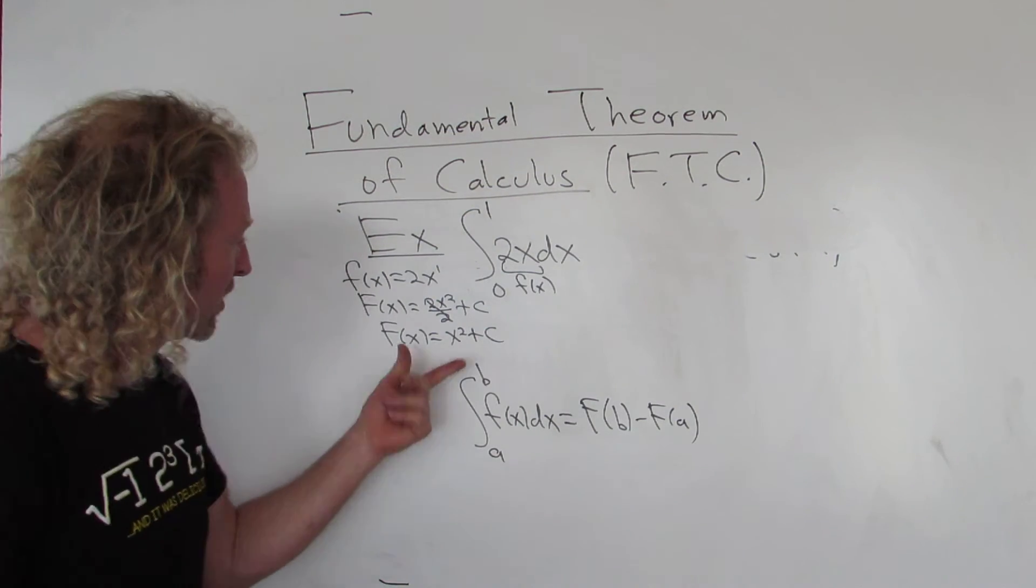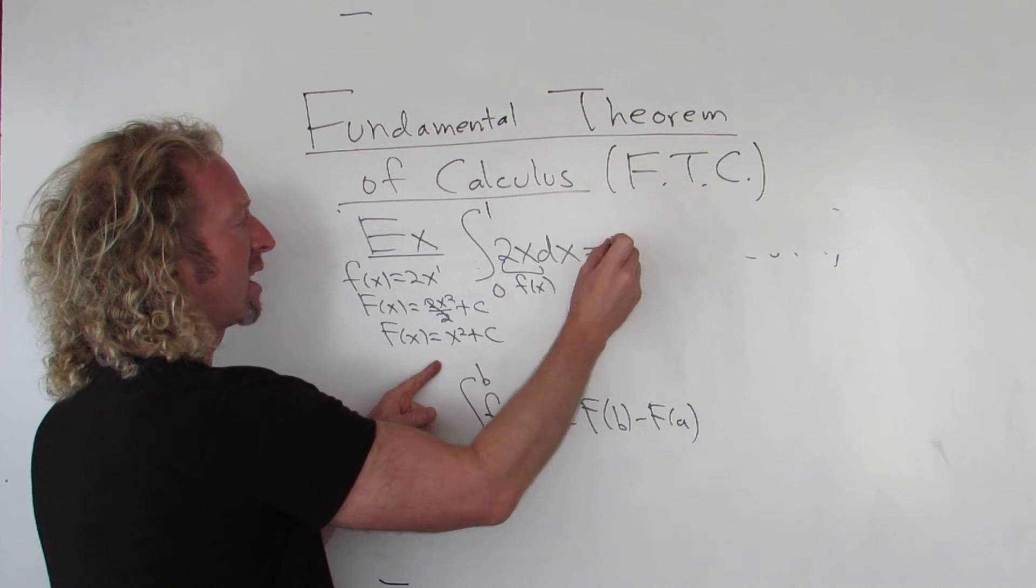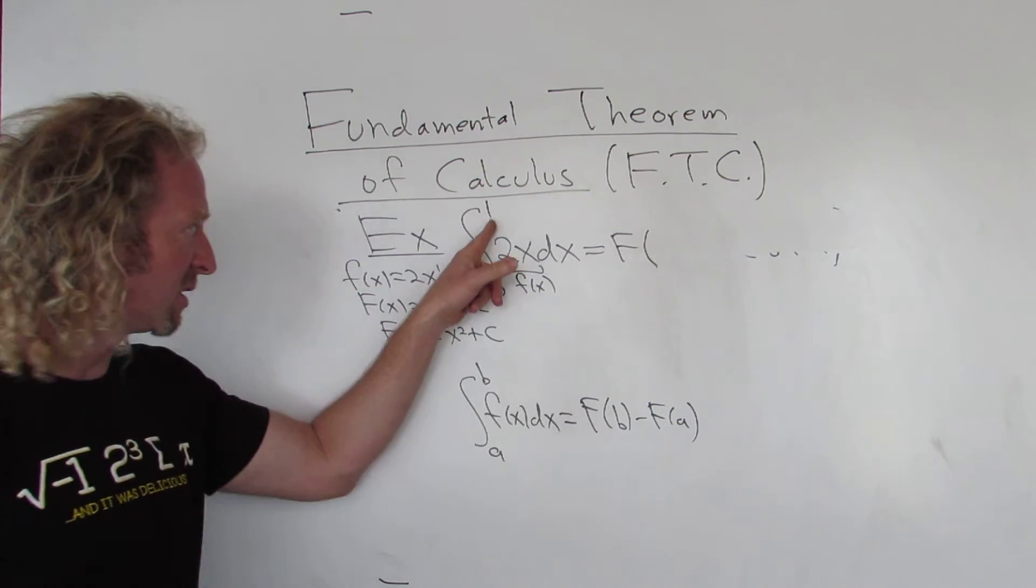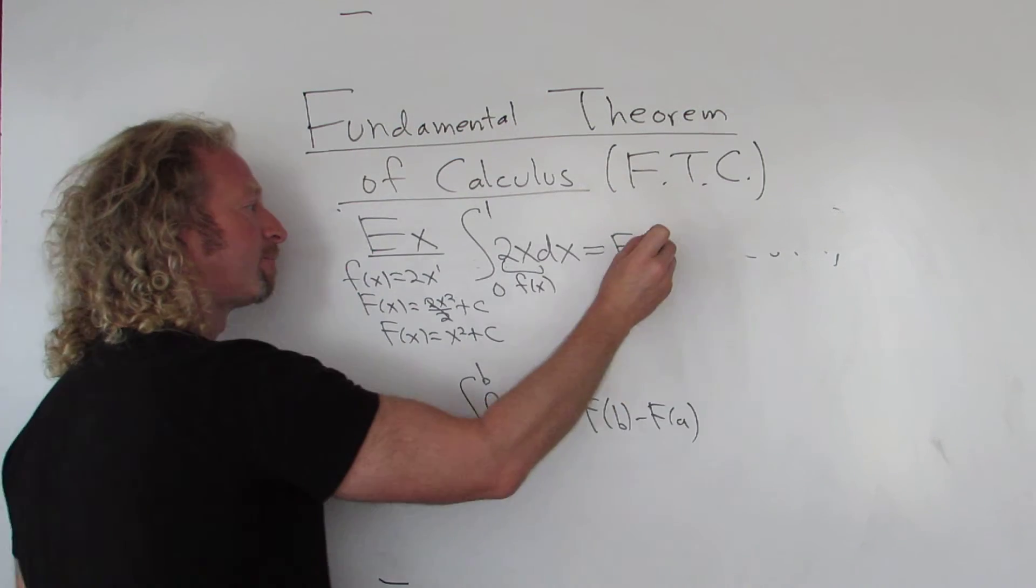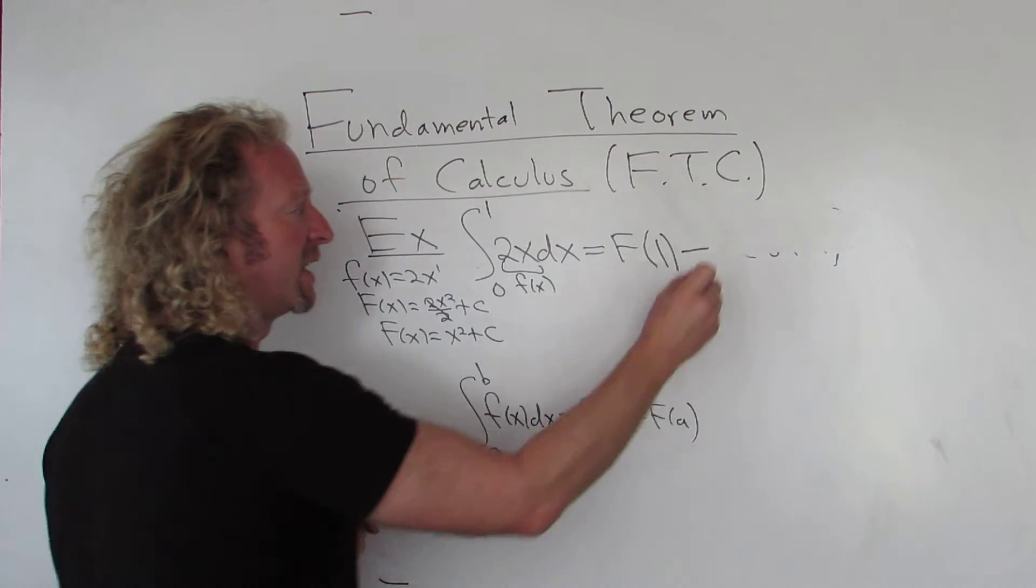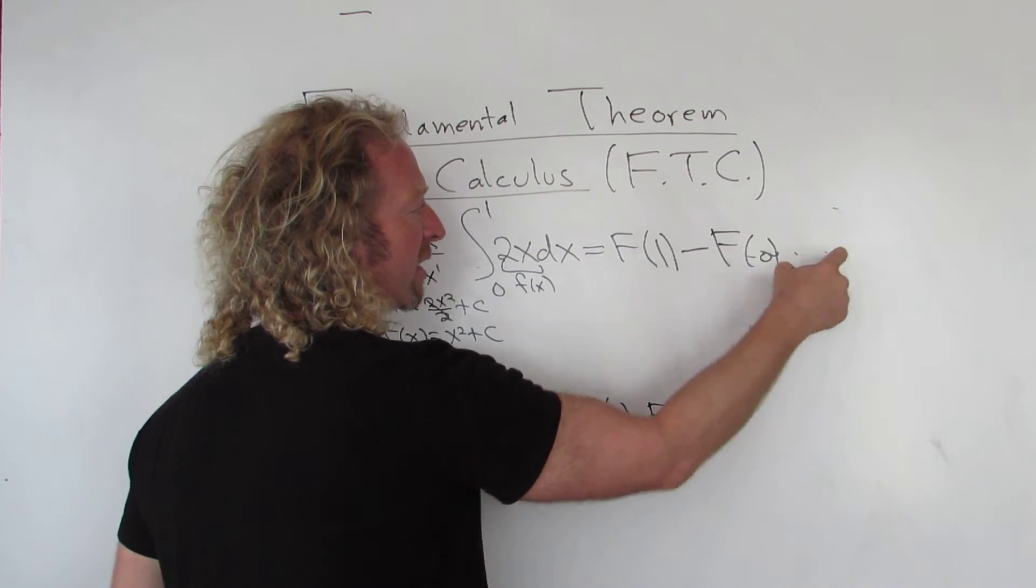Alright, so now we just plug in the numbers. This would be big F, and then b is your first number, so that goes here. So b, minus, and then big F of 0. So that's your a, minus big F of 0. Beautiful stuff.